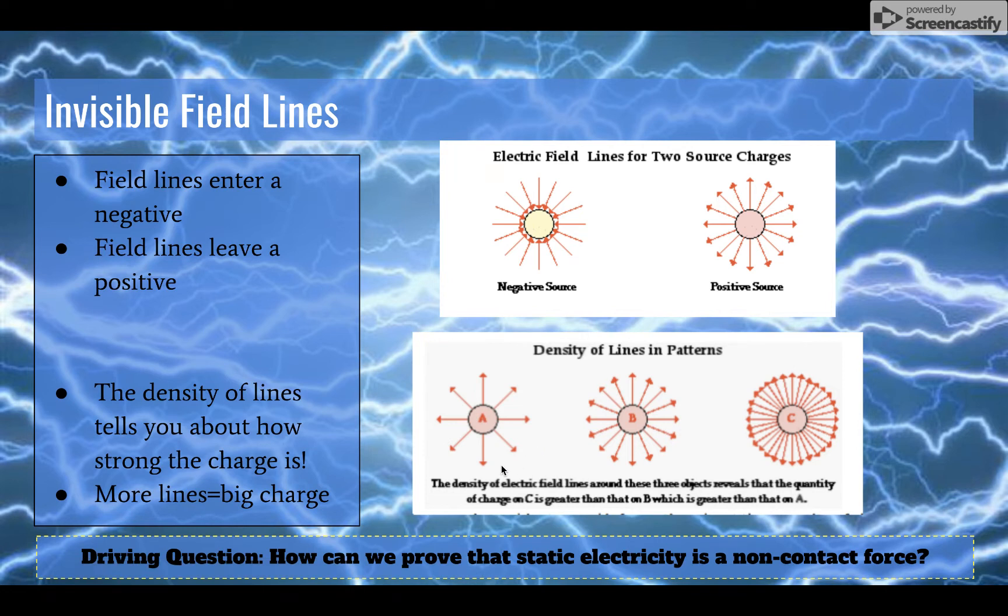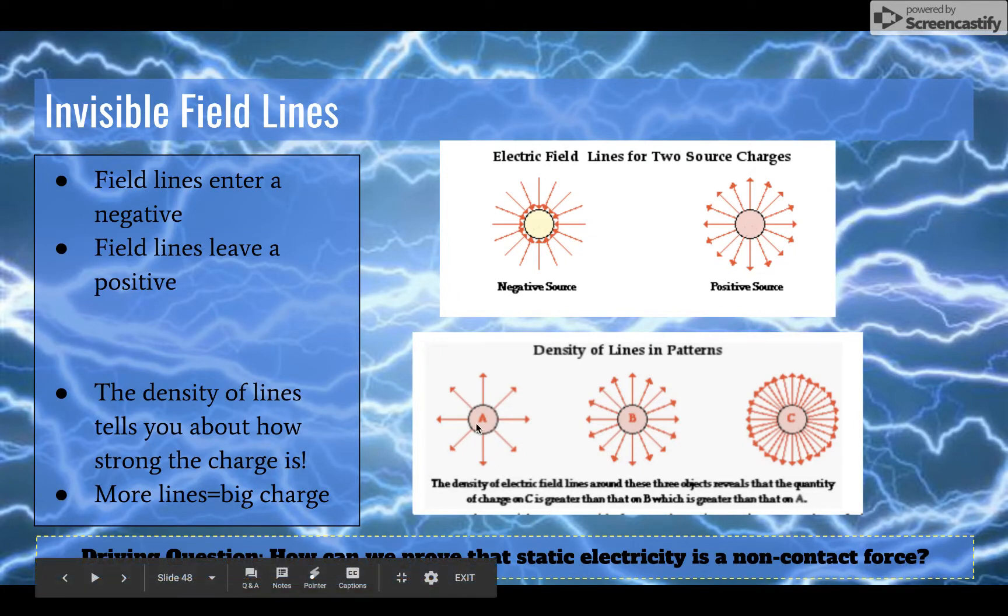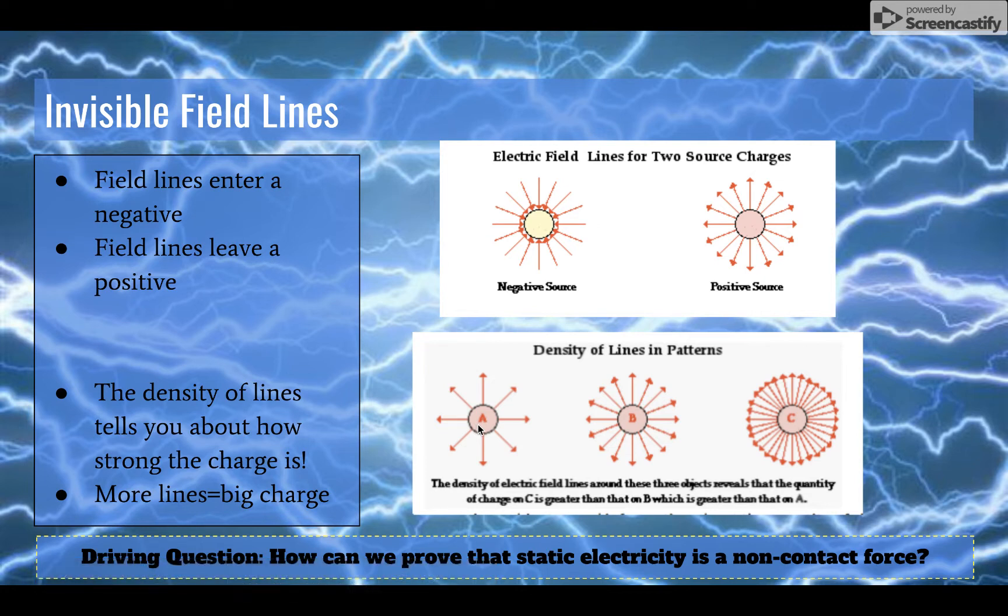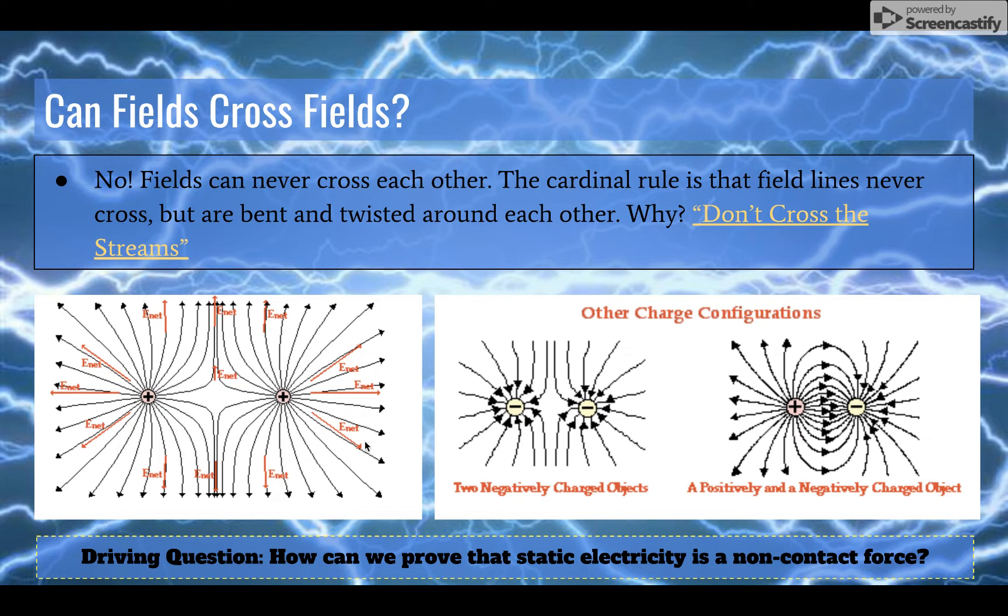Now, drawing different particles with different densities of field lines around them would explain how much charge or the quantity of charge in Coulombs this charge has. It doesn't matter if these are negative or positive - charge A has a lower density of field lines coming from it and charge C has a much greater density of field lines coming from it. So charge A has fewer Coulombs than charge C.